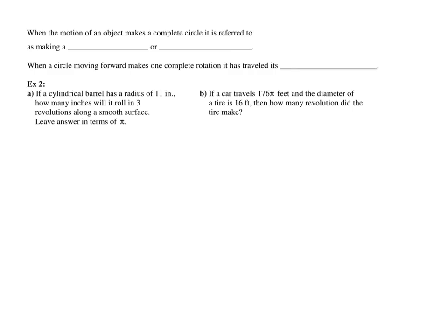When the motion of an object makes a complete circle, it is referred to as making a revolution or a rotation — same thing. When a circle moving forward makes one complete rotation, it has traveled its circumference.